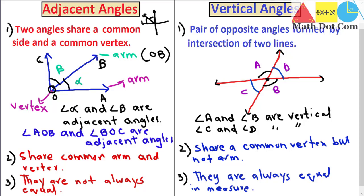One important thing about adjacent angles: sometimes you will come across two pairs of angles drawn separately. Those will not be adjacent angles because they are not sharing a common arm or vertex. In another case, if you have angle alpha and angle beta drawn without a common arm, then alpha and beta will not be adjacent angles — keep this in mind. They must share a common arm. But in the earlier example, OB is the common arm they are sharing.